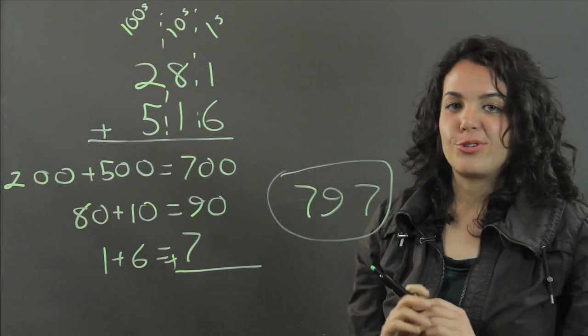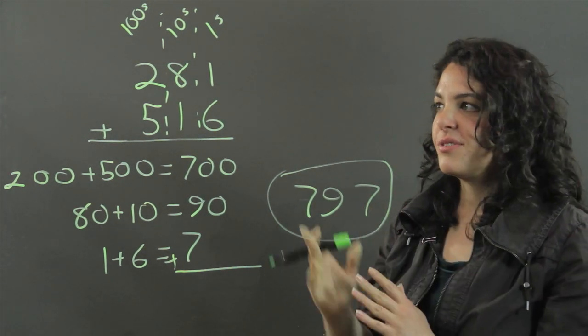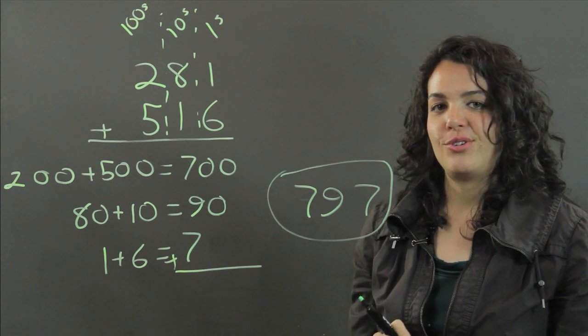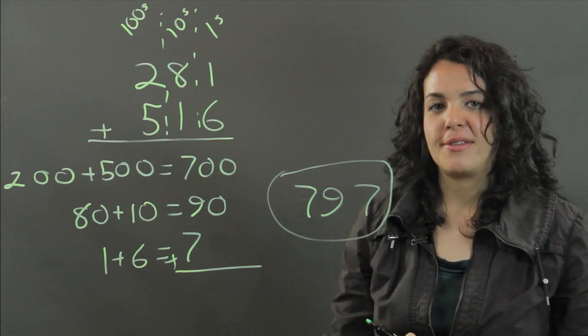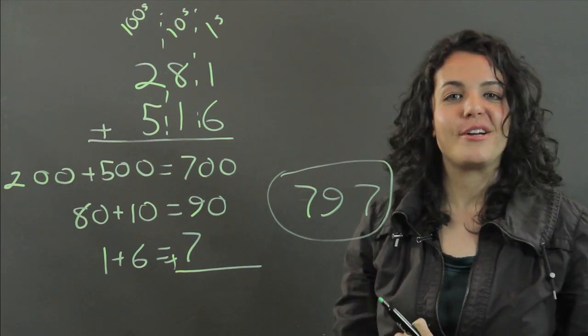And that's why partial sums is great. It almost reads it out to you as you add it, perfect for mental math. That is the partial sums method with three digits. My name is Julia, thank you for watching.